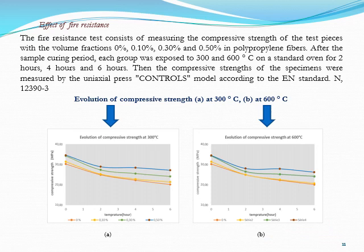For fire resistance, the objective is to study the effects of polypropylene fiber on the resistance of concrete. The concrete mixes are prepared using different fractions of polypropylene fibers. In order to account for the accuracy of the test results, three test pieces were prepared from each group of concrete mixes. All were maintained in a standard cure for 28 days. After the curing period, each group was exposed to 300°C and 600°C for two hours, four hours, and six hours. Then, the compressive strength of the specimens was measured by a compression press.